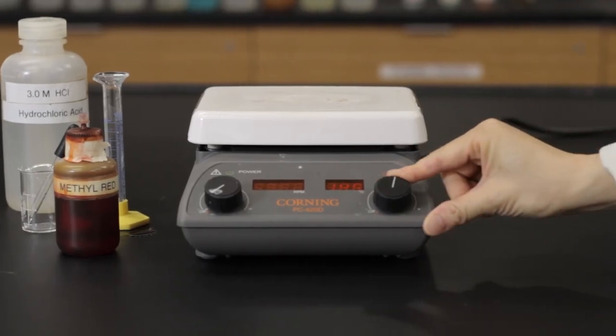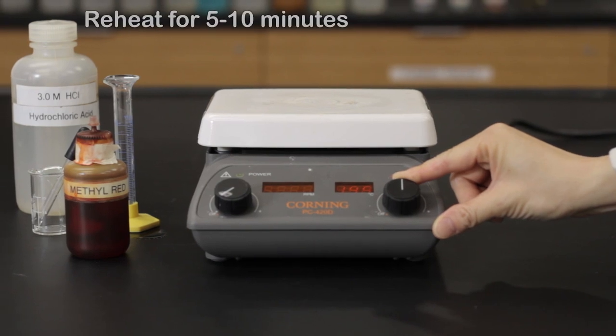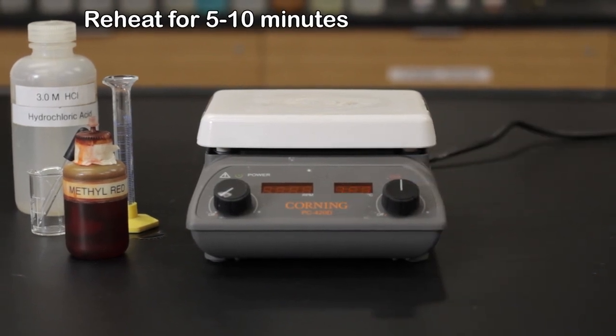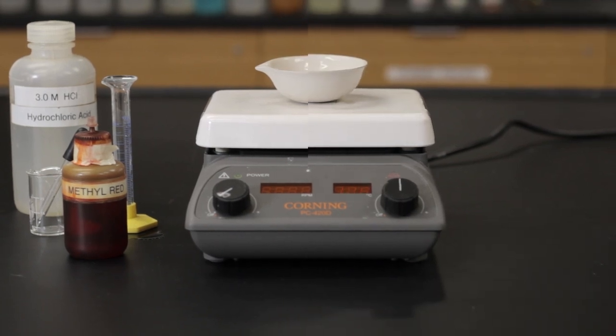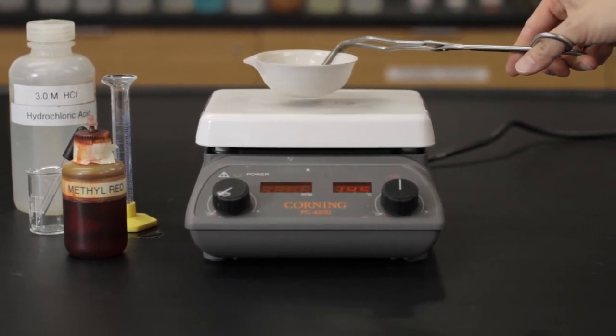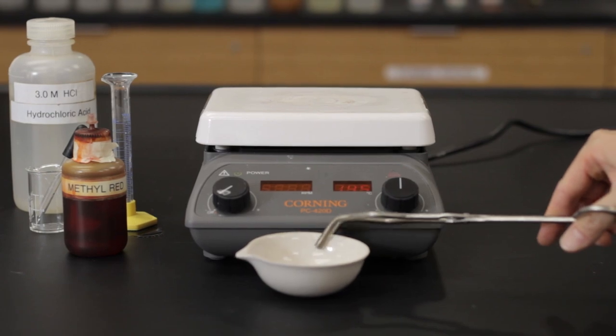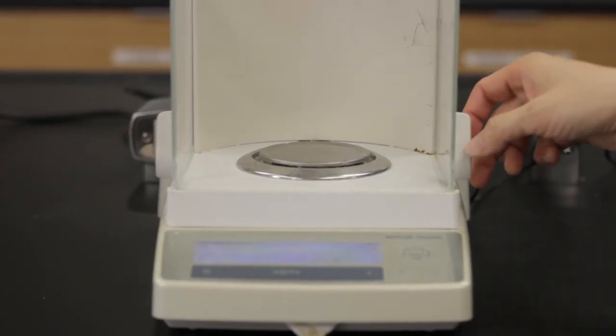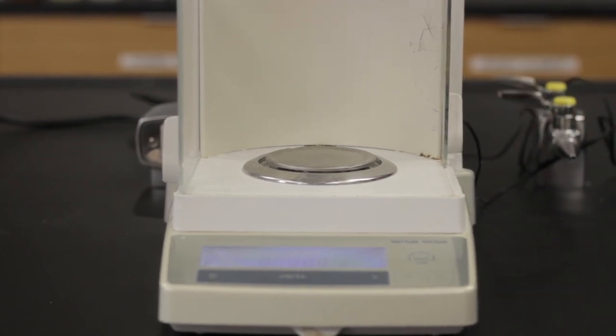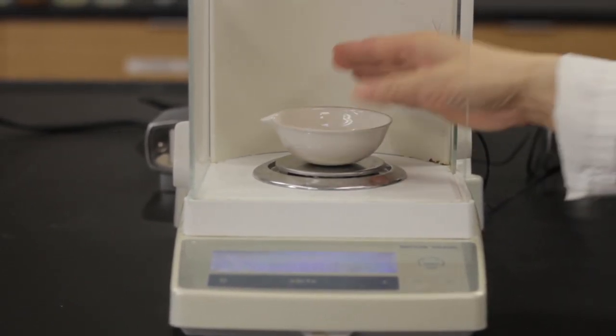Reheat the evaporating dish directly on the hot plate. Remove it off the hot plate using crucible tongs and allow it to cool to room temperature. Weigh the evaporating dish and record the mass. Continue reheating and reweighing until a constant mass is obtained. Then you'll know the product is completely dried.